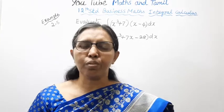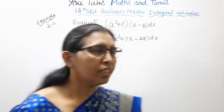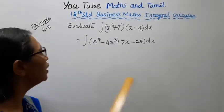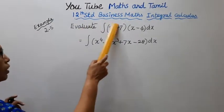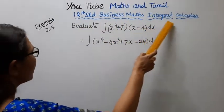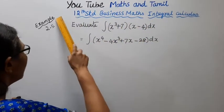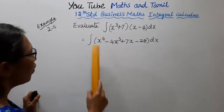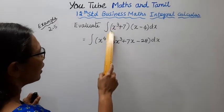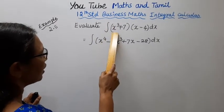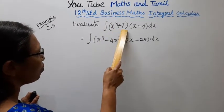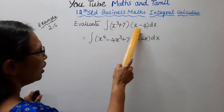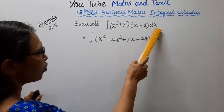Hello students, welcome to Max and Tamil channel. 12th standard business maths, integral calculus, example 2.5. Evaluate the integration of (x cubed plus 7) into (x minus 4) dx.